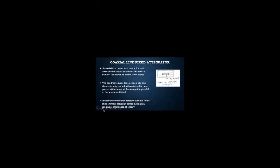Coaxial line fixed attenuators — this is next. A coaxial fixed attenuator uses a film with losses on the center conductor. They absorb some of the power as shown in figure A. It has a lossy material present in the middle.